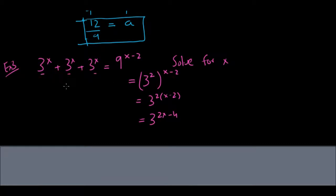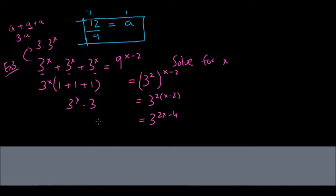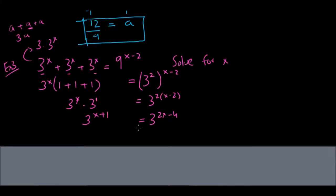On the left side, I have 3 to the x added three times. I can factor out 3 to the x, leaving 1 plus 1 plus 1, which is 3. Or simply: I have 3 copies of 3 to the x, so it's 3 times 3 to the x — just like a plus a plus a equals 3a. Using the rule that when bases are the same powers add, 3 times 3 to the x equals 3 to the x plus 1.